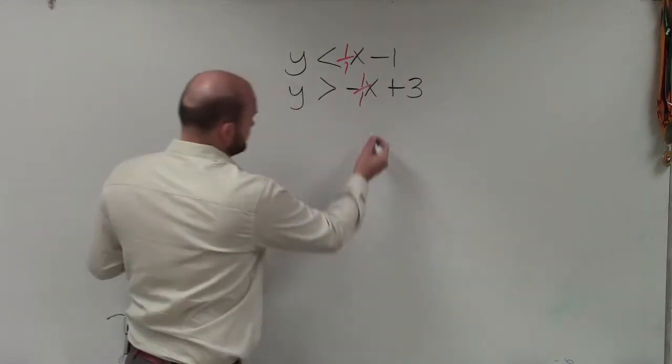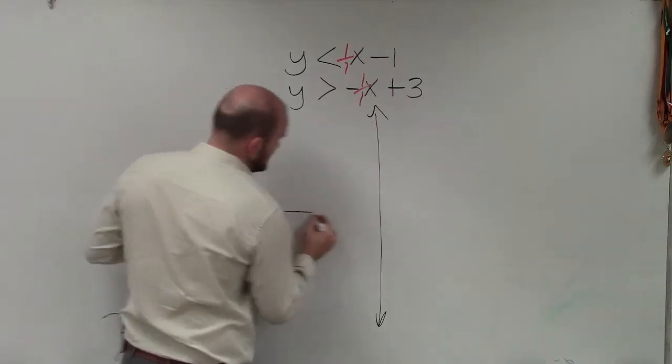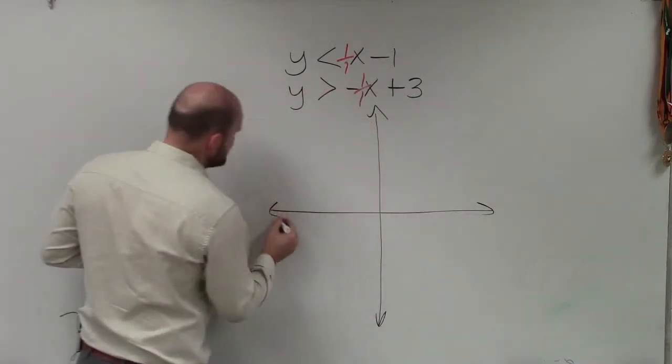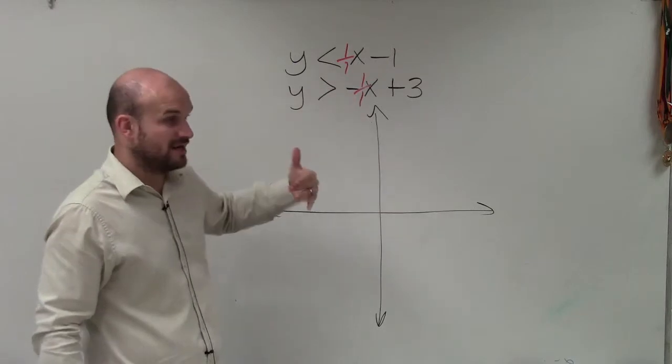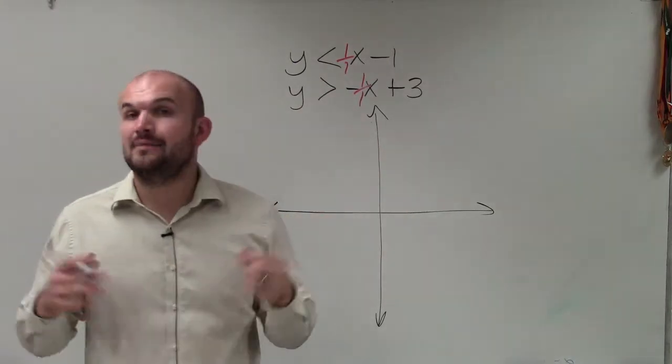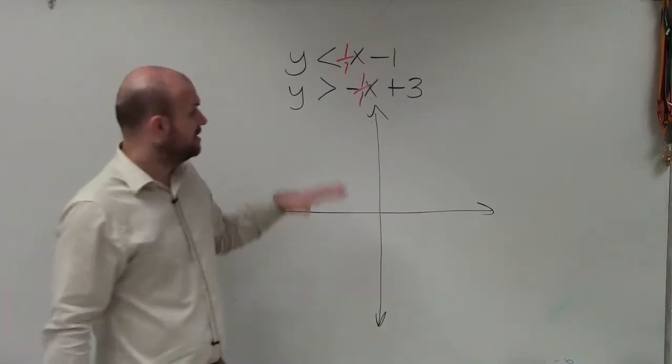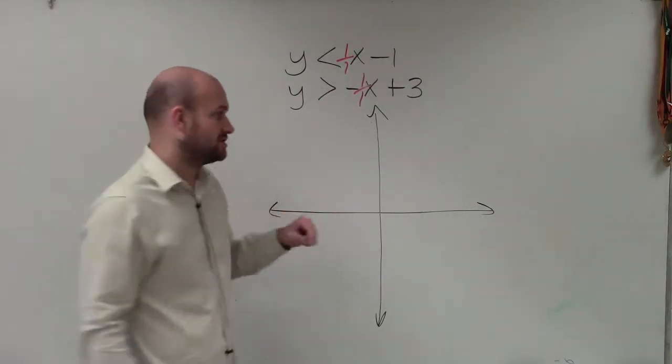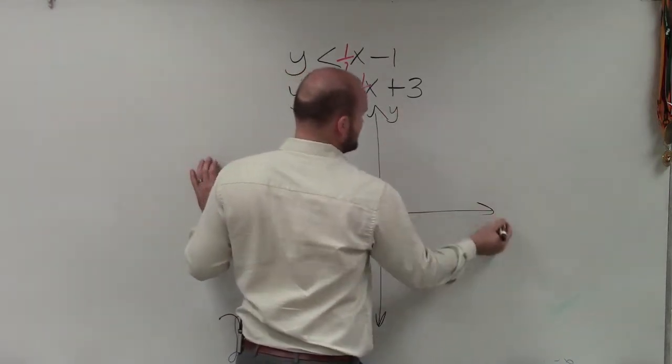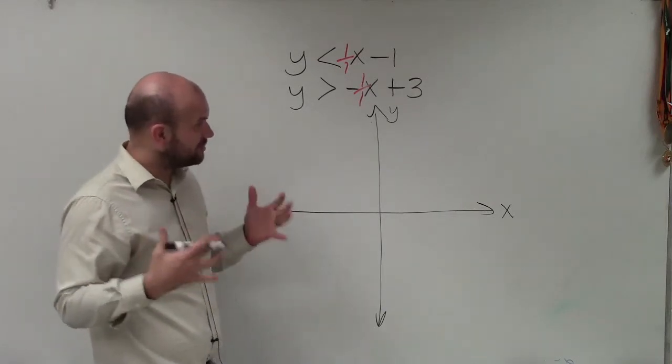So to graph this, I'm going to forget about the shading for a second and just pretend these are equations. However, I do notice that both of my inequality symbols are less than and greater than, not less than or equal to or greater than or equal to. So therefore, I am not going to be graphing solid lines. I'm going to be graphing dashed lines, because both of these boundary lines are not a part of the solution. So I have my y-axis and my x-axis. The first thing I want to do is plot the y-intercept for each equation.